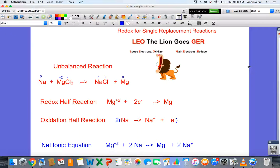In this video, we're going to talk about redox for single replacement reactions. Redox is short for reduction and oxidation, which occurs when electrons are transferred from one species to another. The species that loses electrons is oxidized, while the species that gains electrons is reduced.